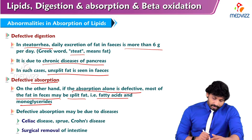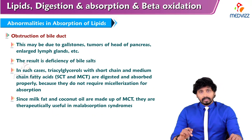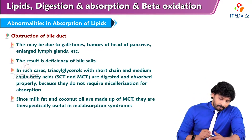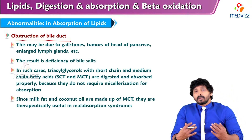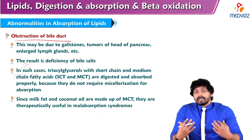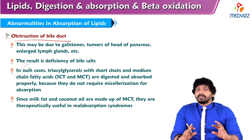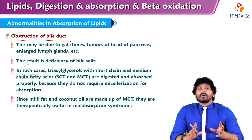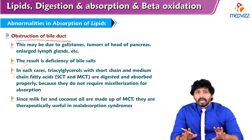Defective absorption may be due to celiac disease, sprue, Crohn's disease, or surgical removal of some part of the intestine. Another abnormality of lipid absorption involves obstruction of the bile ducts. Bile salts provide a detergent action for emulsification of fats for better digestion. If bile salts are not present, there is no emulsification and no detergent function, so lipids cannot form micelles and pancreatic lipases will not efficiently work on them.